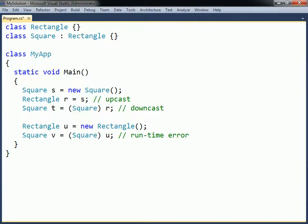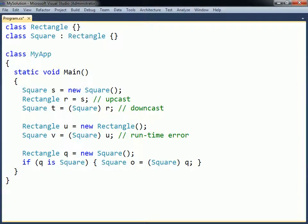There are two operators that can be used to avoid exceptions when casting objects. First there is the Is operator, which returns true if the left side object can be cast to the right side type without causing an exception.